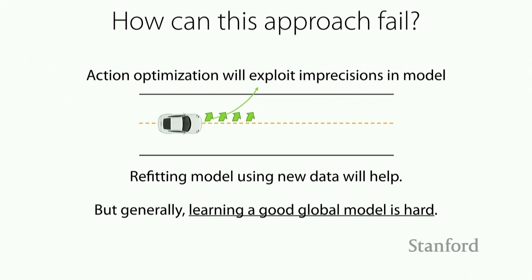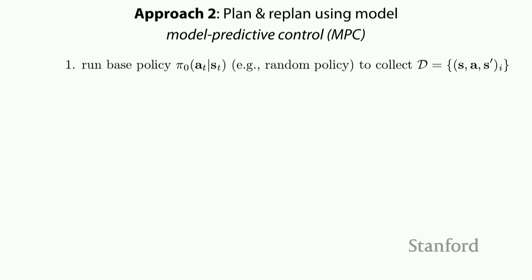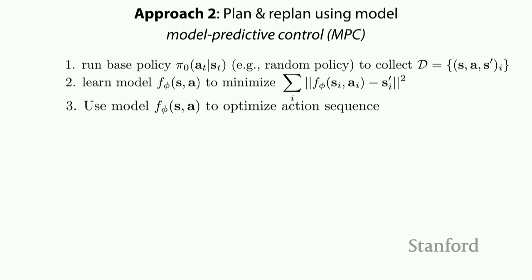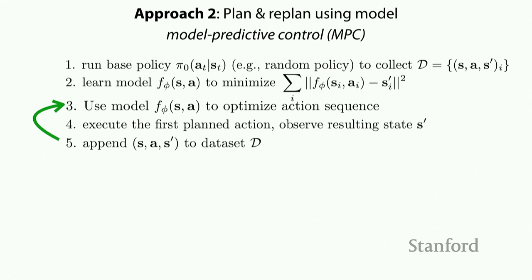Another trick is replanning — or model predictive control (MPC). You run your policy, collect data, fit a model, use the model to optimize over an action sequence, but then execute only the first planned action, observe the resulting state, append this to your dataset, and replan from the state you just observed. This way, if you end up at an unexpected state, you won't keep executing actions as if you were in the state you thought you'd reach — you replan to correct for your mistake at each time step. This helps address compounding errors.